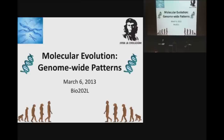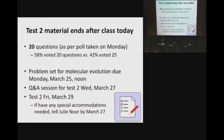I'll go ahead and keep emailing you guys a to-do list for the week, but your to-do list for this coming Friday and the following Friday will be very short. We voted in class on Monday about test two — 58% versus 42% voted in favor of 20 questions, so that will be the length for test two. The problem set for molecular evolution is not due until Monday, March 25th.